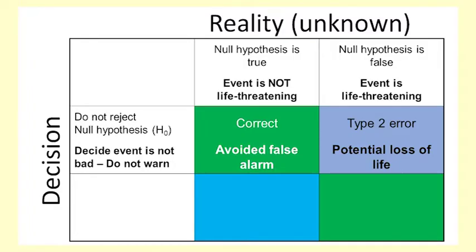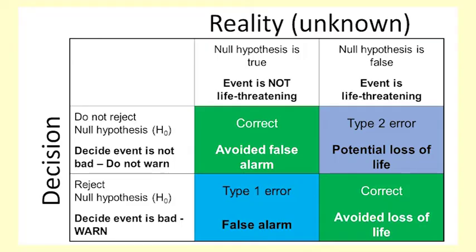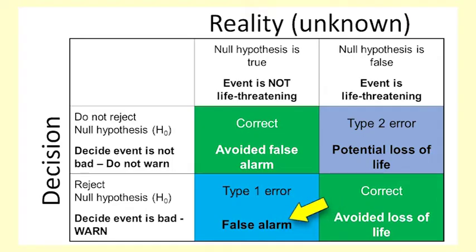There are costs to both types of error. Generally, it is better to err on the side of a Type 1 Error in this instance and send out a warning that turns out to be unneeded.